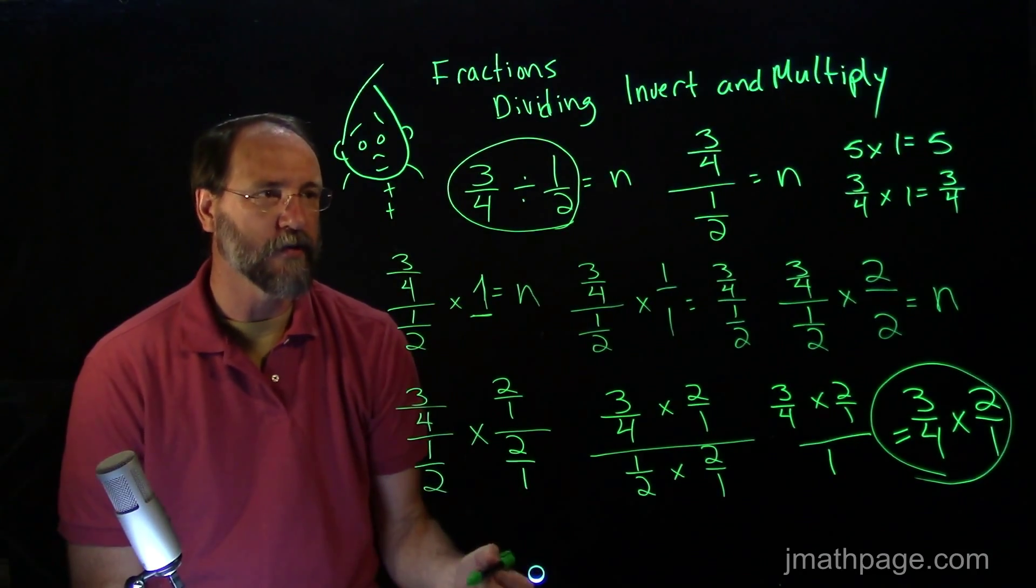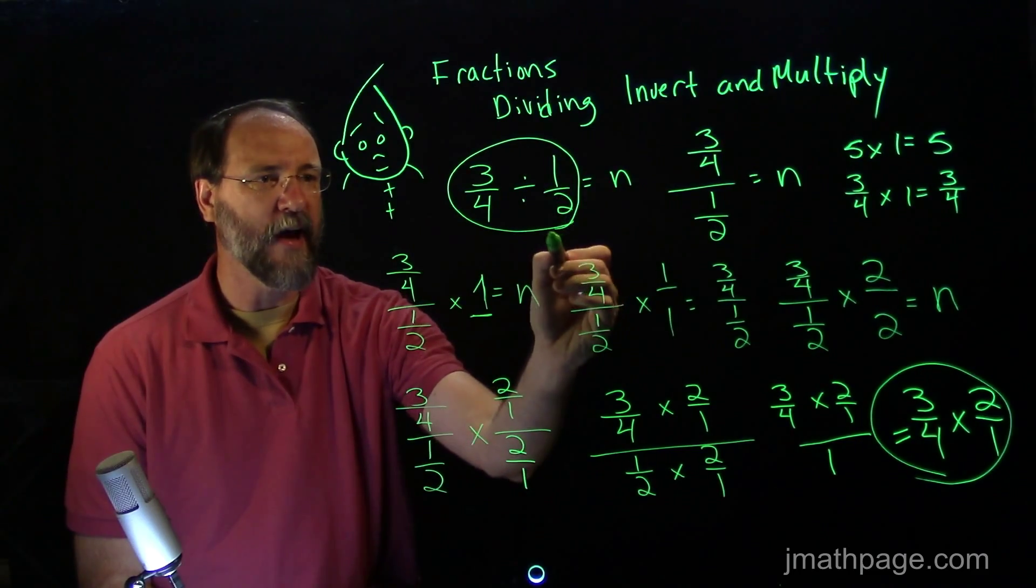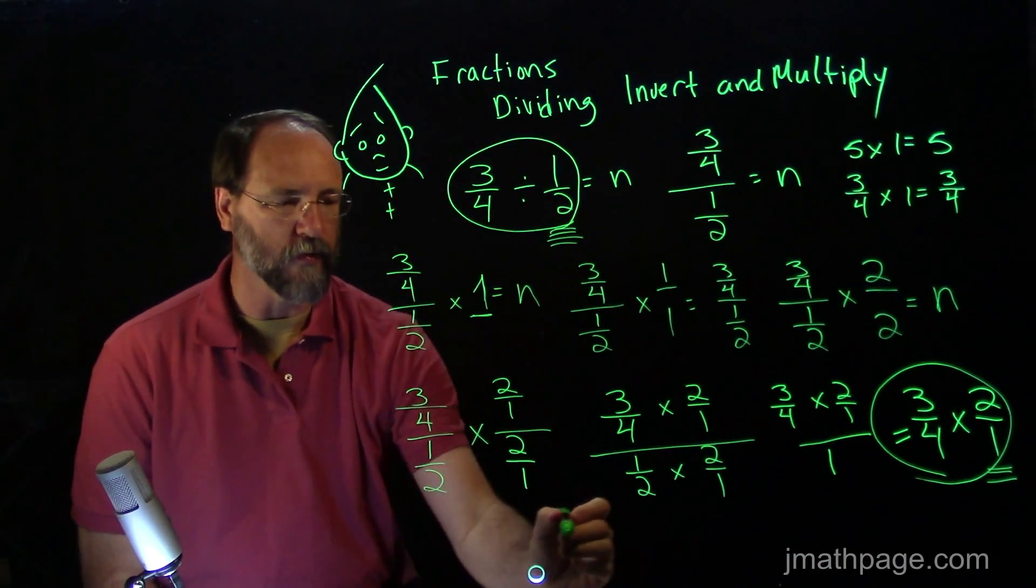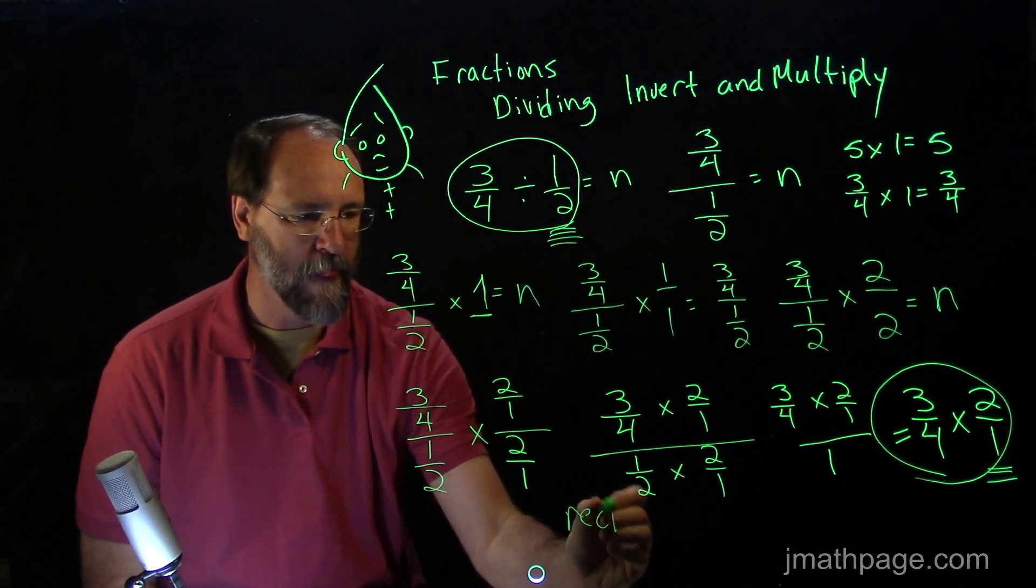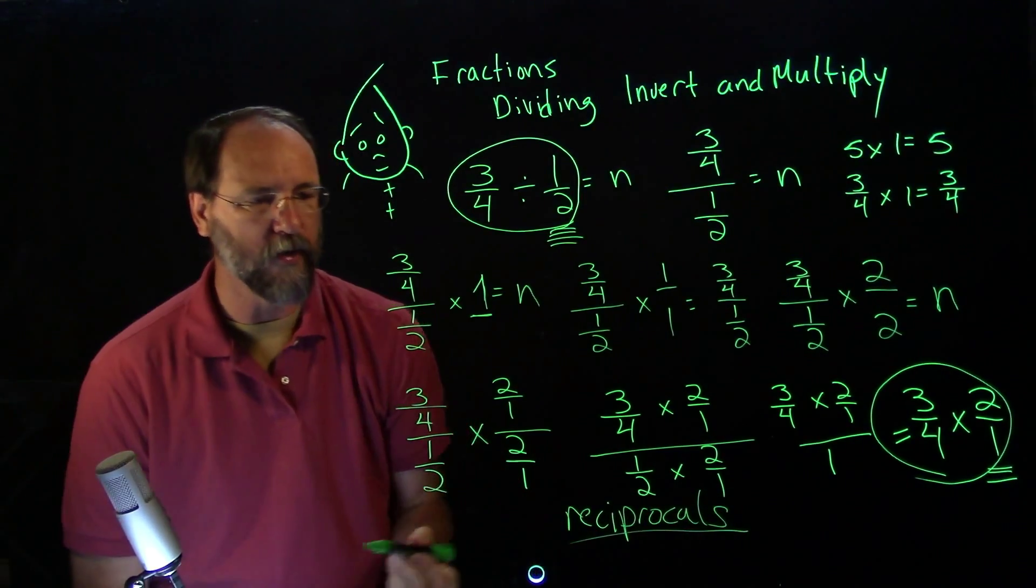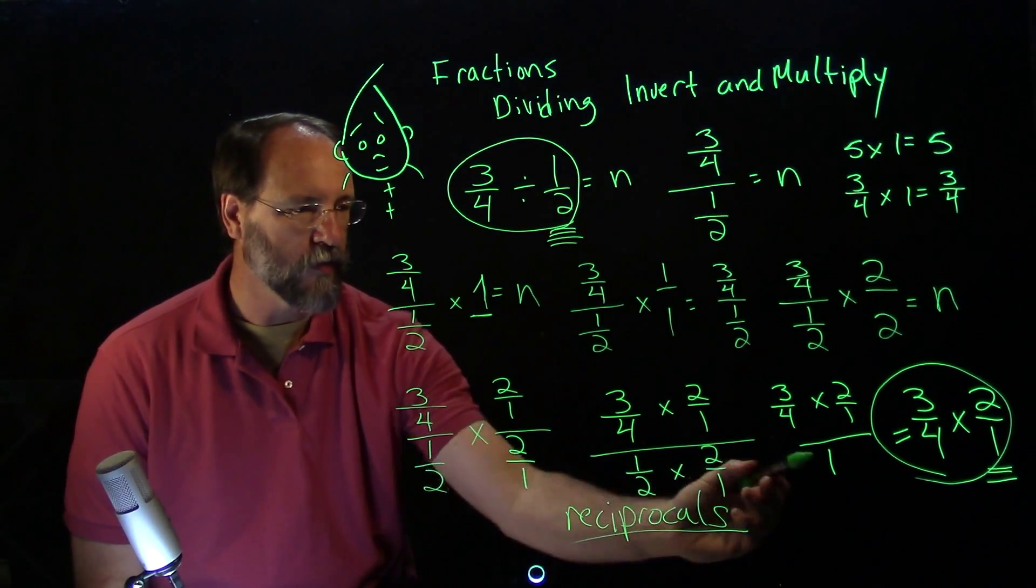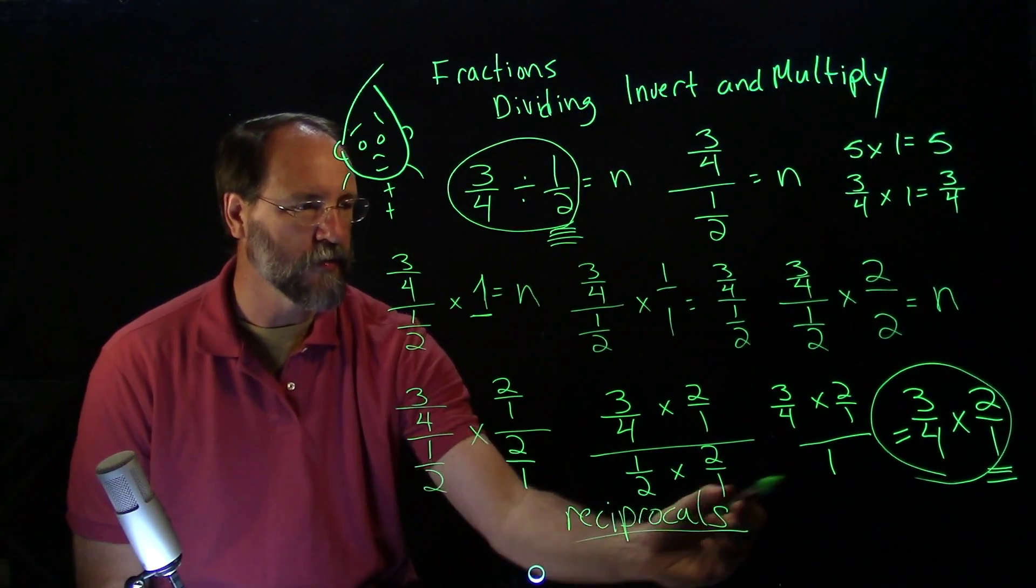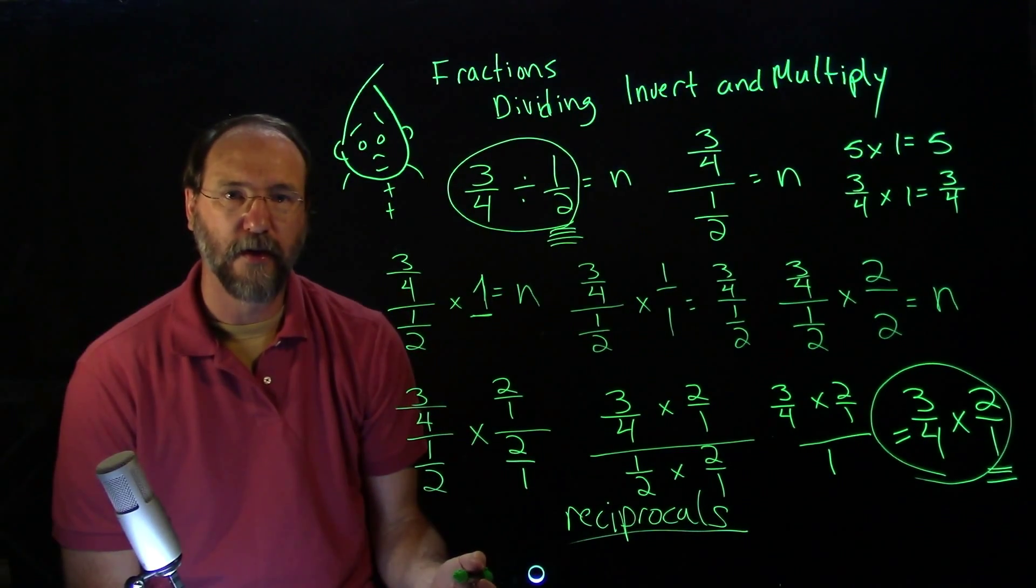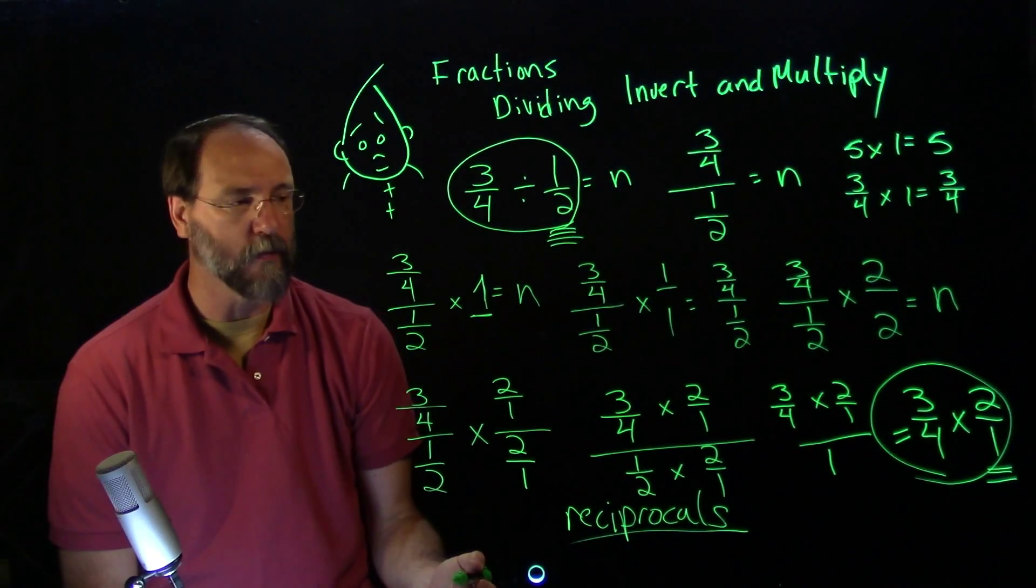Now one big word that you have to hold on to when you understand this. This 1 half and this 2 over 1 are reciprocals. And reciprocals are very important. Reciprocals allow you to get to 1. 1 half times its reciprocal gives you 1. That's what makes it work underneath it all. I hope this was interesting for you. Think about how this can be helpful when you're working with fractions. We'll do some more math sometime.